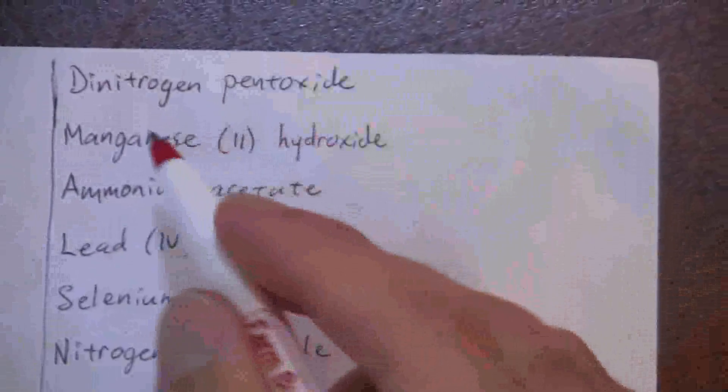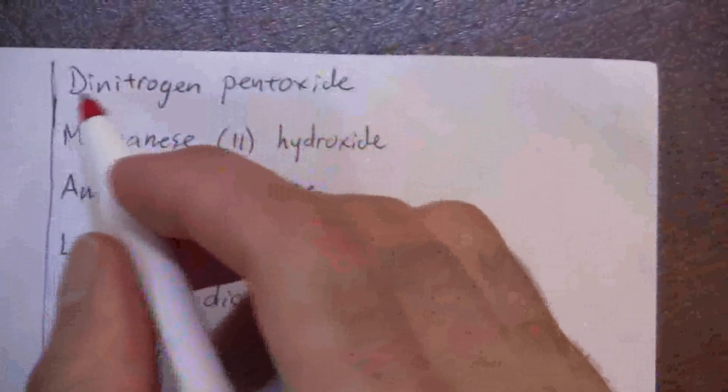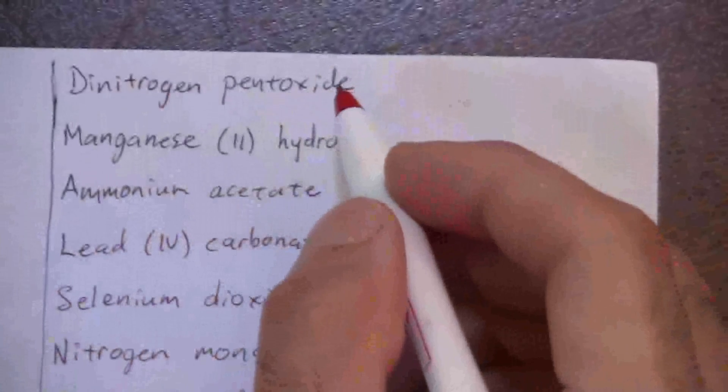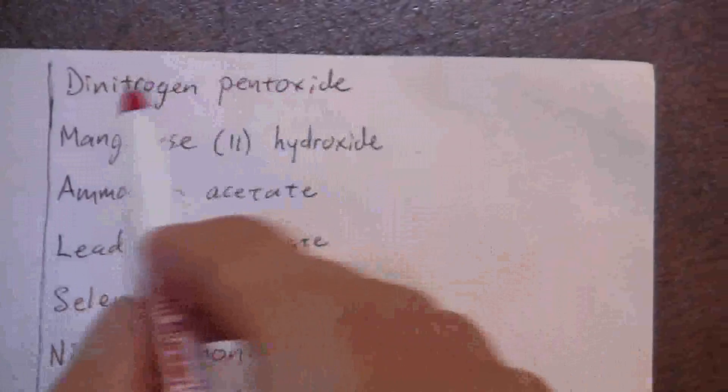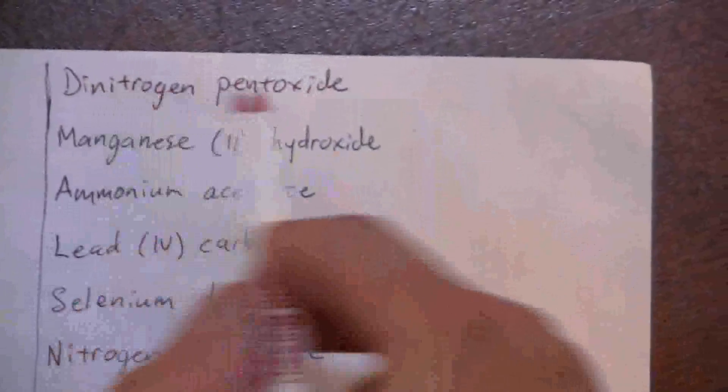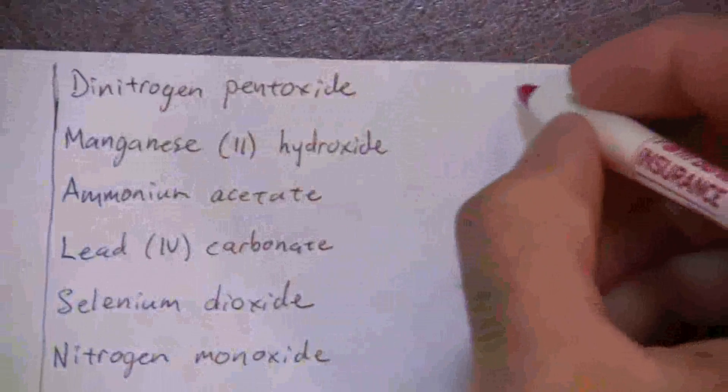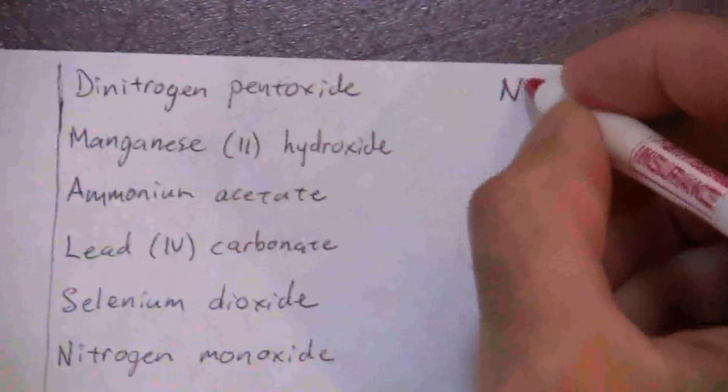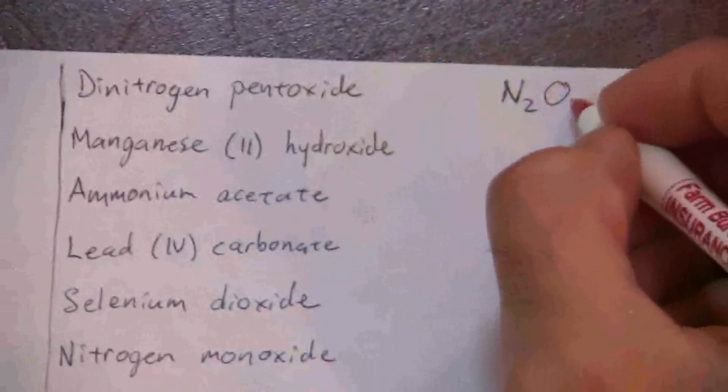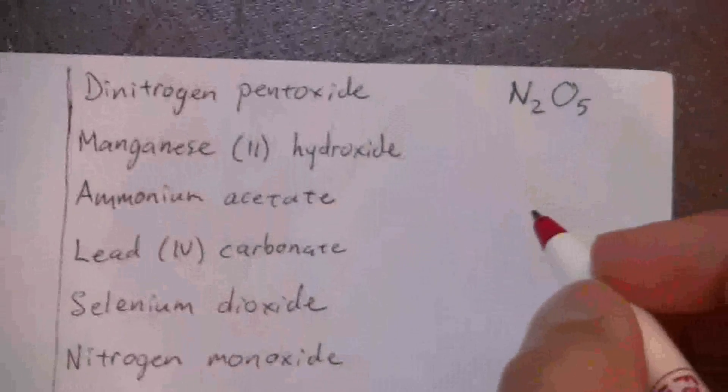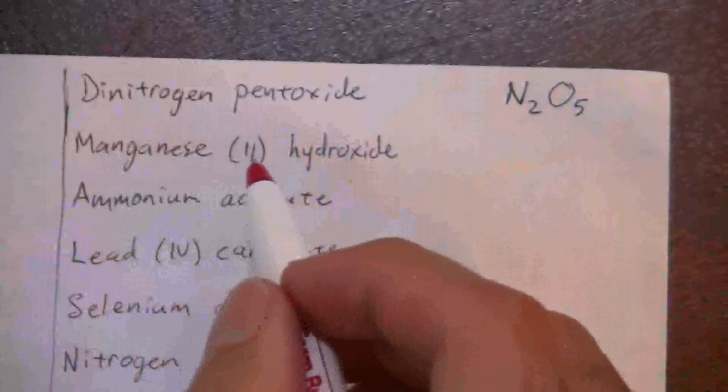We'll just jump in and go through these fairly quickly. Dinitrogen pentoxide - clearly this is a molecular compound. We have nitrogen and oxide, two non-metals. Dinitrogen pentoxide - these ones are pretty easy. Di is two, pent is five, so N2O5.